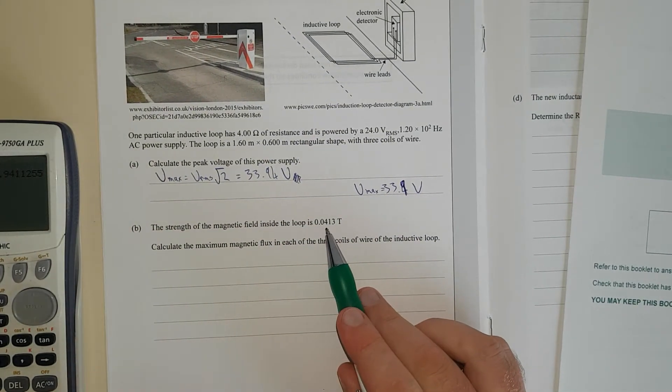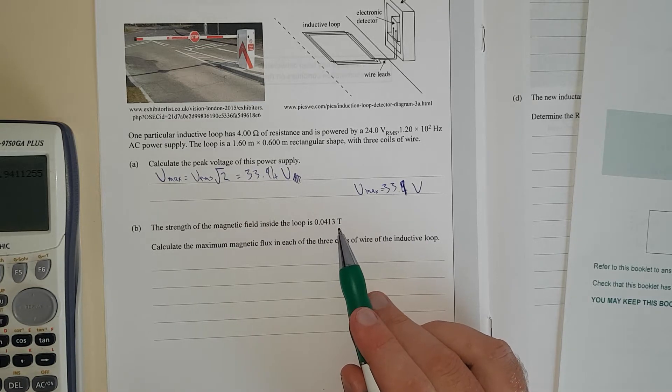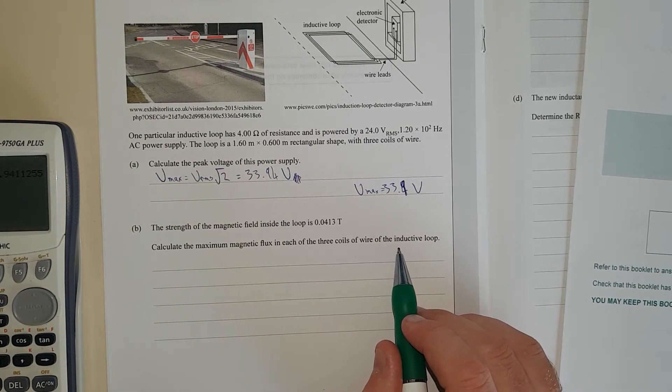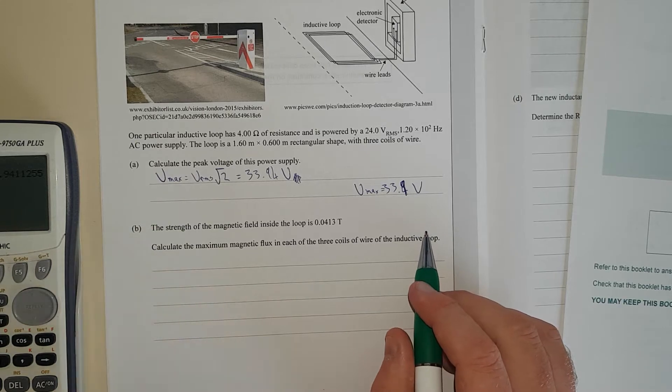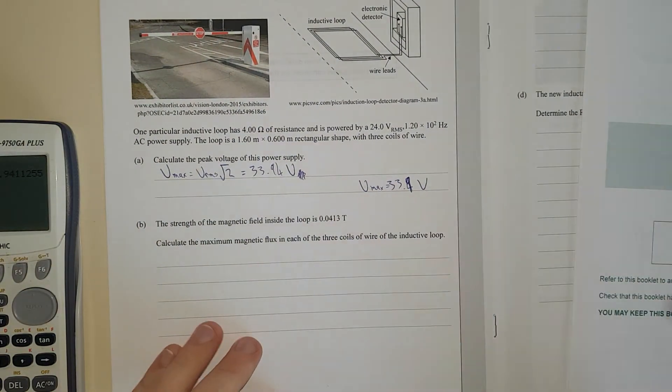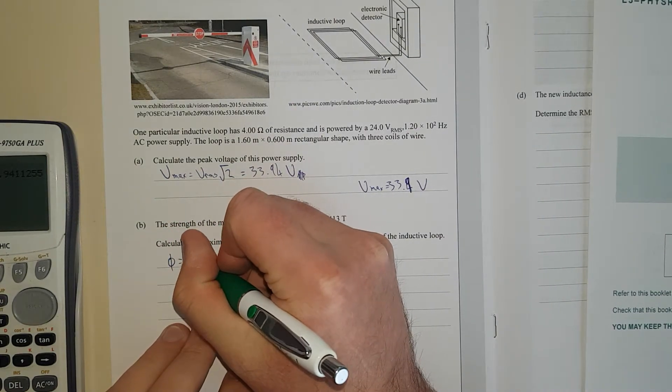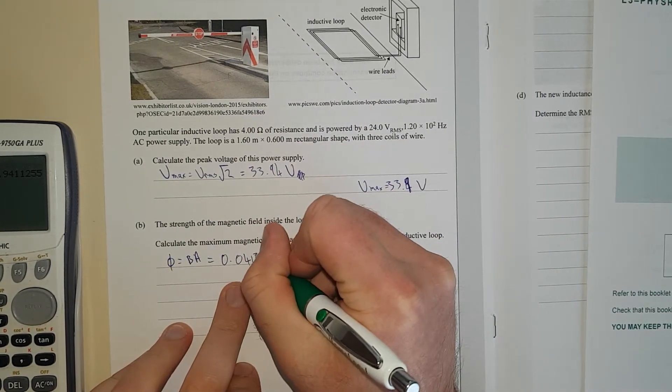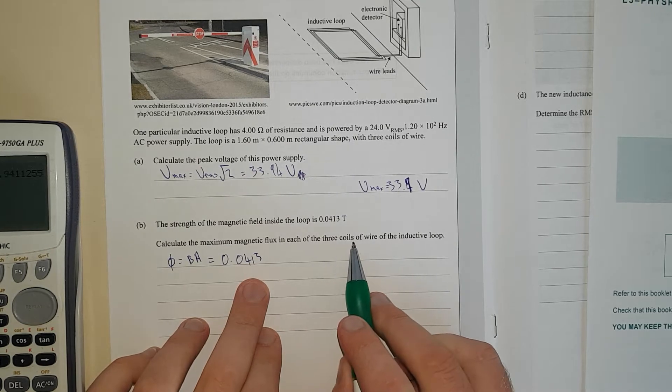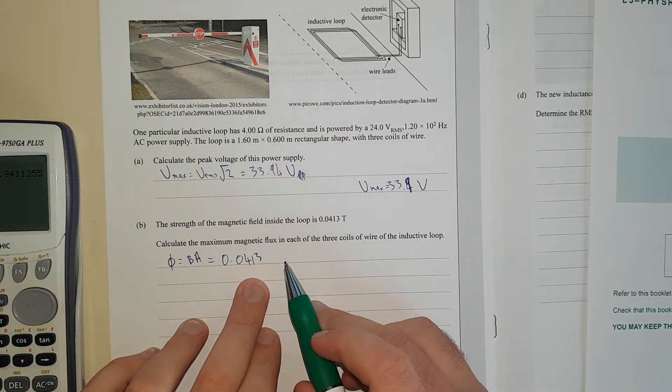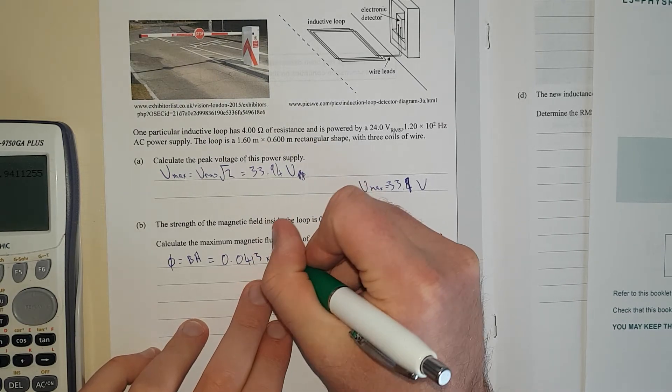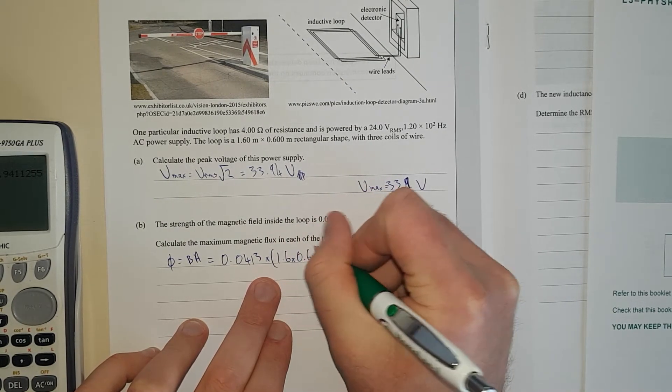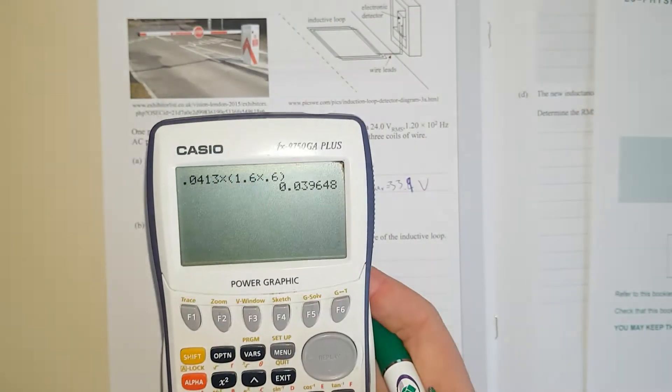The strength of the magnetic field in the loop is 0.0413 teslas. Calculate the maximum magnetic flux in each of the three coils of wire in the inductive loop. From the formula sheet, magnetic flux is just the magnetic field times the area, which is 0.0413 times the area, base times height.